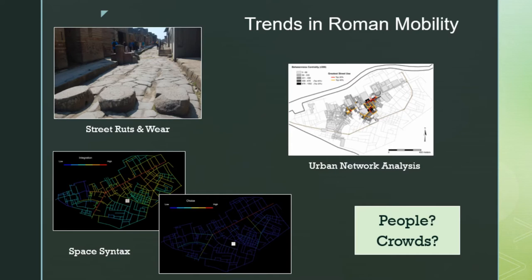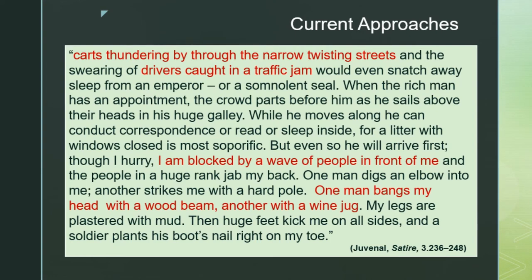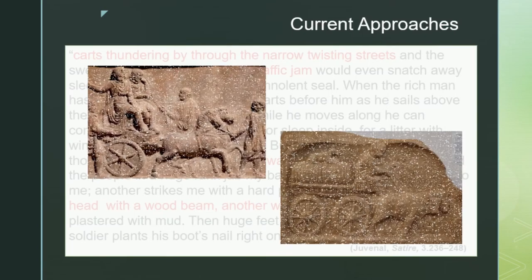When trying to address this within Greek and Roman approaches, we look at what we know about crowds and interactions within streets. We can go to literary sources — here I have an example from Juvenal's Satires — talking about carts thundering down streets, traffic jams and annoyances in the ancient city, and all the people: if there's a procession or economic transport going through, you might get run over if you're standing in the wrong space. But this is hard to translate back to the archaeological record.